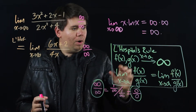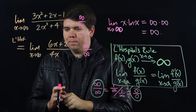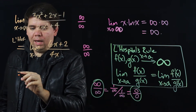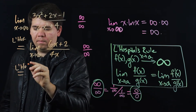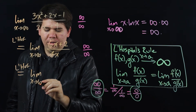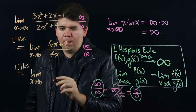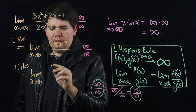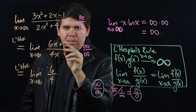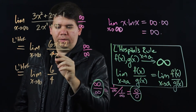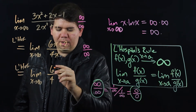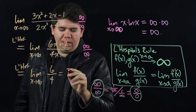Since it's still of the right form, we can apply L'Hôpital's rule again. Applying L'Hôpital's rule, this becomes the limit as x goes to infinity of 6 divided by 4. The derivative of 6x plus 2 is 6, and the derivative of 4x is 4. That limit comes out to be 6 over 4, or 3 halves.